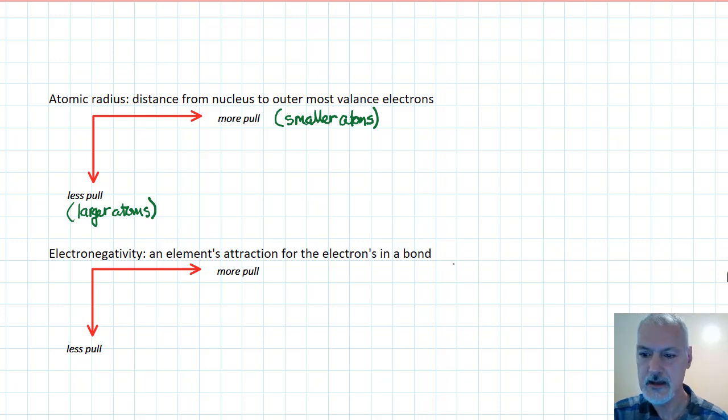Electronegativity is defined as an element's attraction for the electrons in a bond. If we have more pull, we have more attraction. So we would expect electronegativity to increase. So I'll write that as EN increases. With less pull, we have less attraction. So we would expect our electronegativity to decrease down the periodic table.